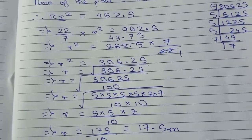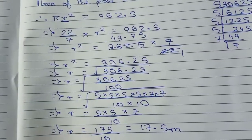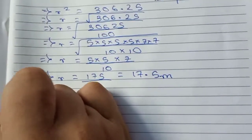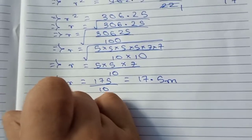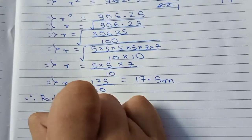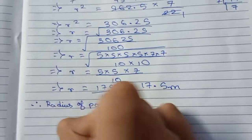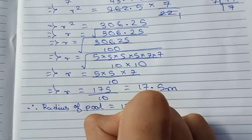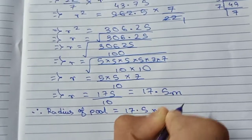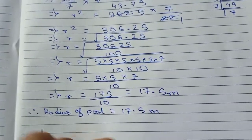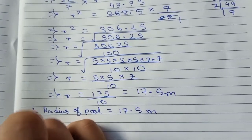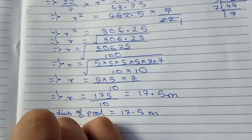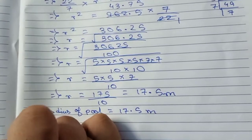Therefore we write the radius of the pool equals to 17.5 meter. Now we are looking for the area of the path.